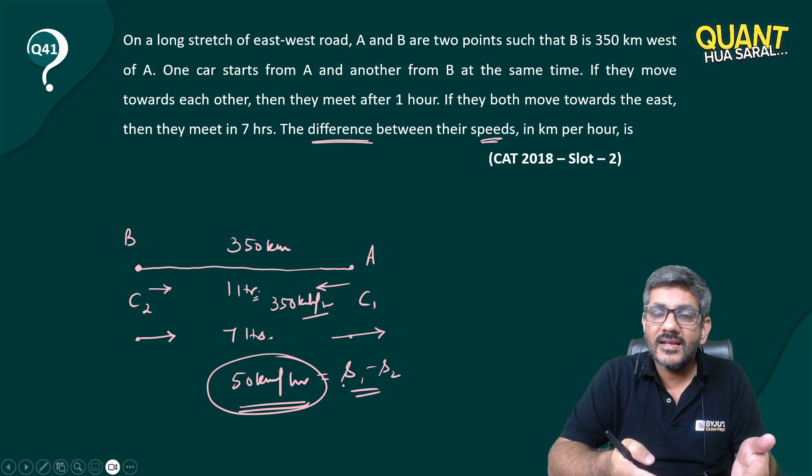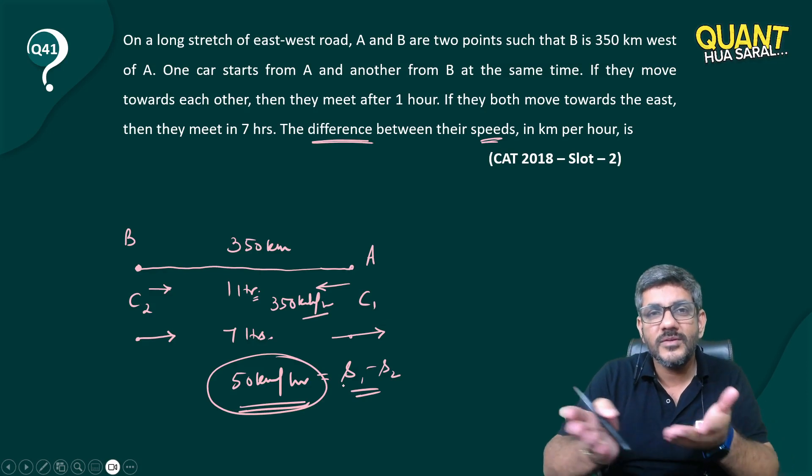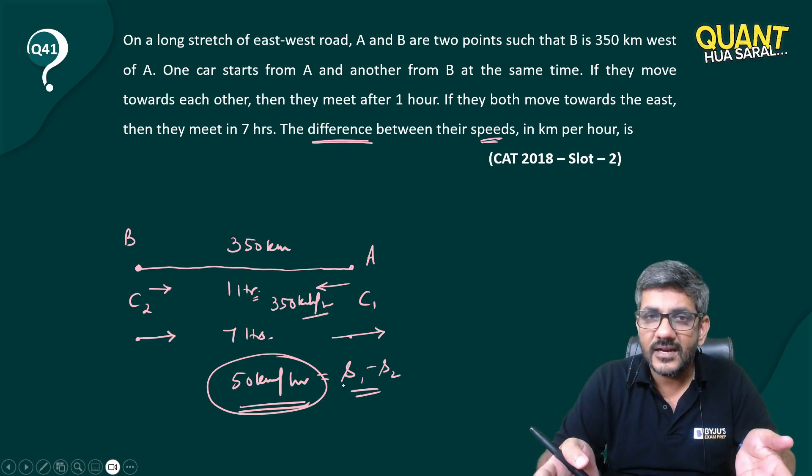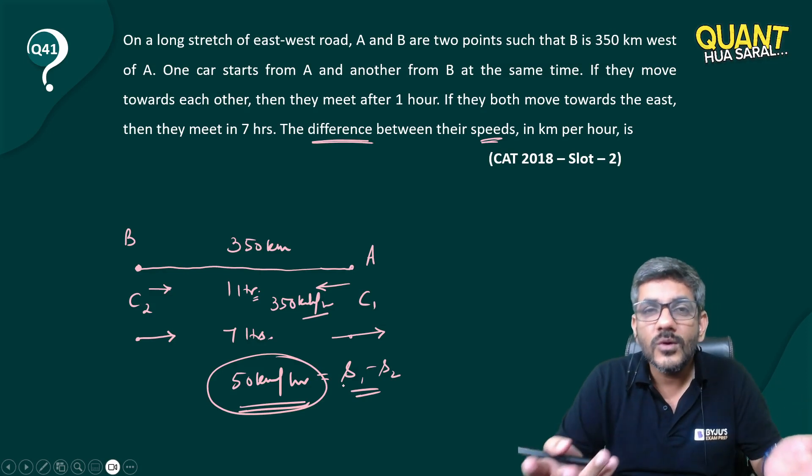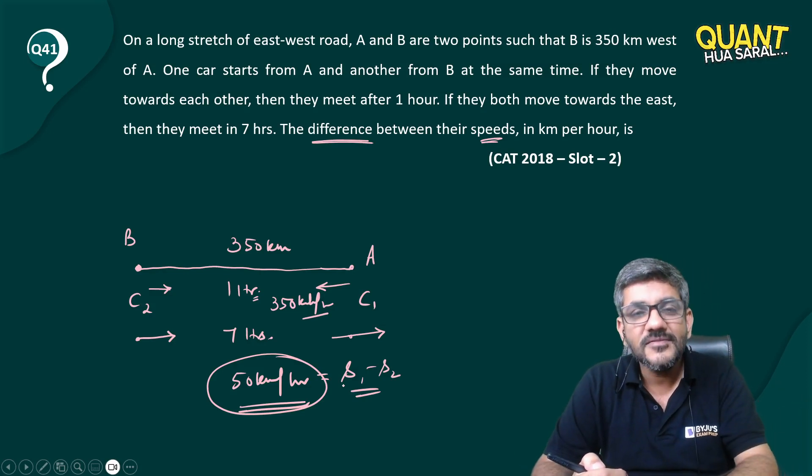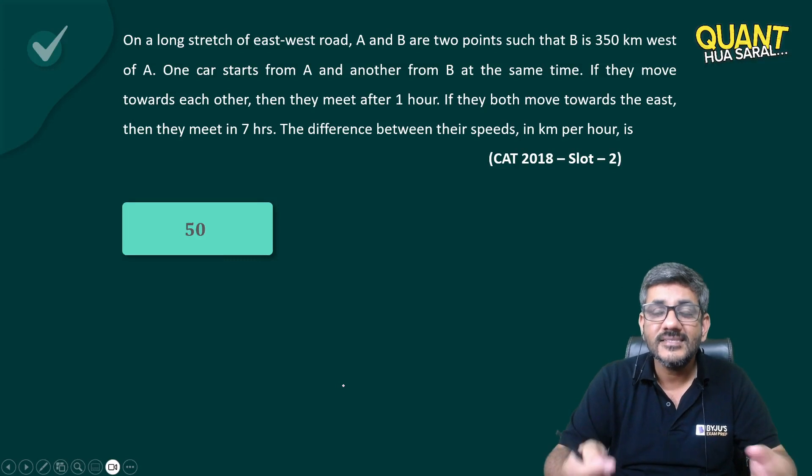So ultimately this question was: two cars are moving in the same direction, 350 kilometers is traveled in seven hours. What is the difference of their speeds? It is 50 kilometers per hour and that is the answer.